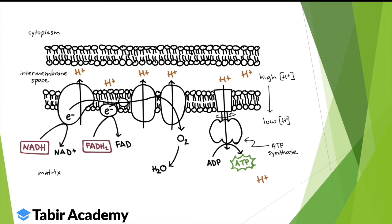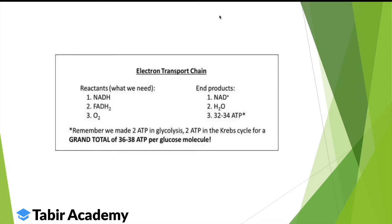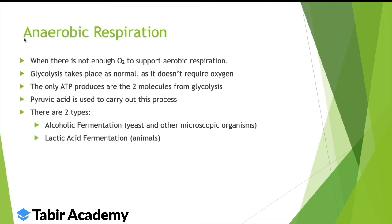The inputs to the electron transport chain are NADH, FADH2, and oxygen. The end products are NAD+, H2O, and 32 to 34 ATP. Combined with 2 ATP from glycolysis and 2 ATP from the Krebs cycle, the total is 36 to 38 ATP per glucose in aerobic respiration.